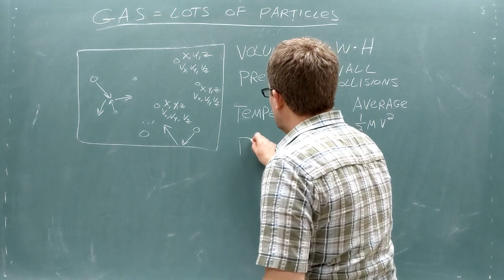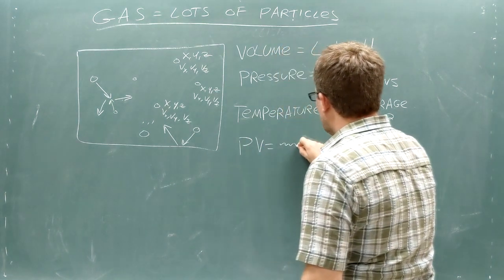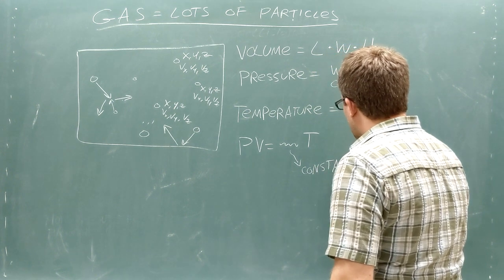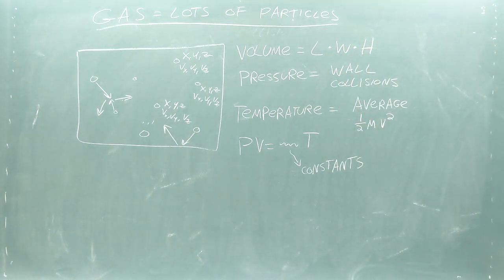These three overall properties are related by the ideal gas law. Pressure and volume go on one side of the equation and temperature goes on the other side. There are some other numbers in this equation, but they're usually kept constant while we focus on volume, pressure, and temperature.